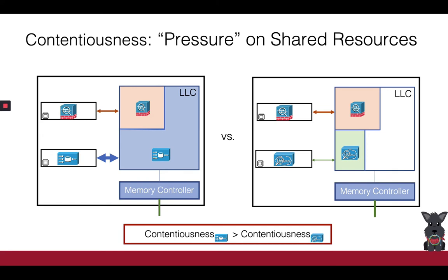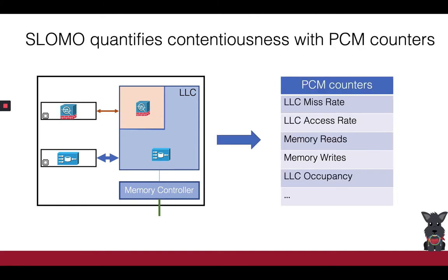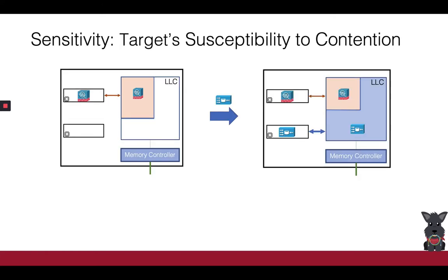A natural challenge with characterizing contentiousness is identifying the right metrics to do so. We identify an opportunity in using the PCM hardware counters, which can expose the competitor's resource utilization at multiple granularities through hundreds of candidate metrics. In our analysis, we show how SlowMo picks a practical set of representative metrics for contentiousness characterization.